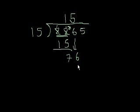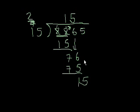So 5 times 5. Once again, I figured it out in my head. But I'll just do it again. 5 times 5 is 25. Then 5 times 1 is 5 plus 2 is 7. Now we just subtract. 76 minus 75 is clearly 1. Bring down that 5.